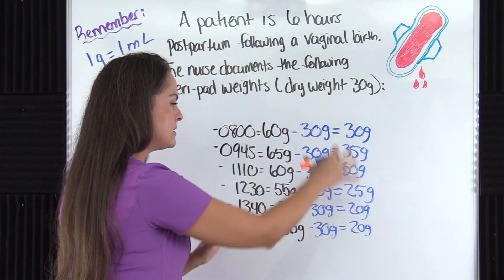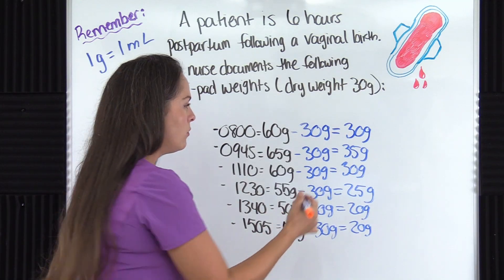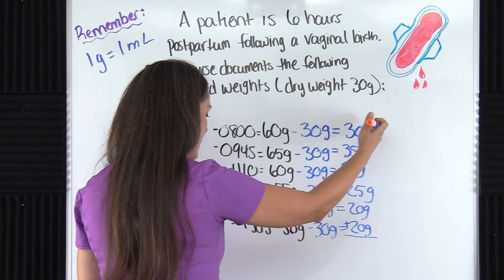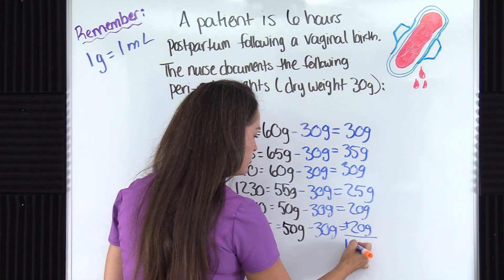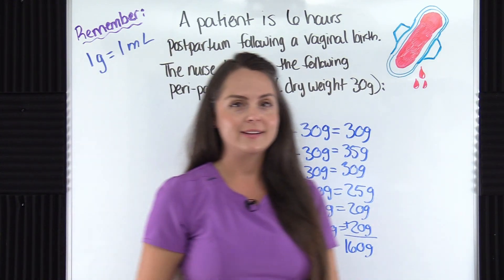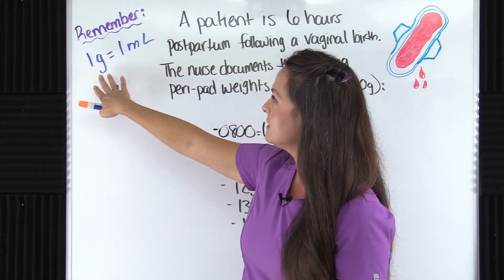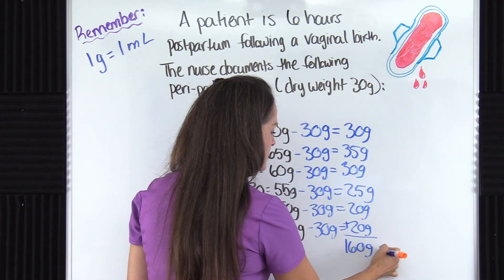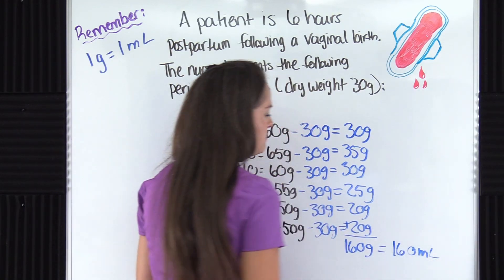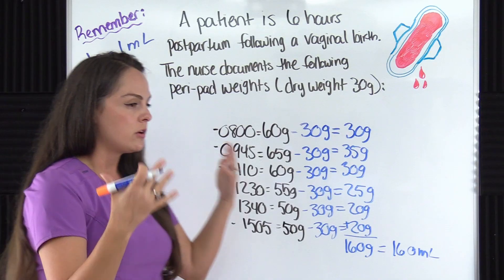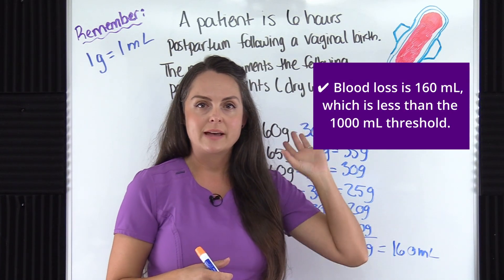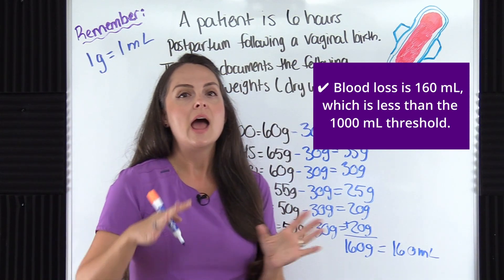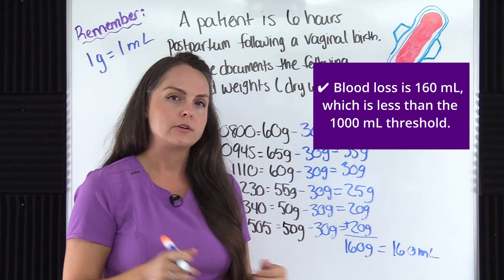We have all of these estimations. Now what we need to do — because we want to know the total — is add these numbers together. When we add all of this together we get 160 grams. And since one gram equals one milliliter, 160 grams is 160 milliliters of estimated blood loss. This falls under that 1,000 milliliter threshold, but we still want to keep track of our patient, taking into account what they lost during the actual birth and as they go on through the postpartum period within that first 24 hours.